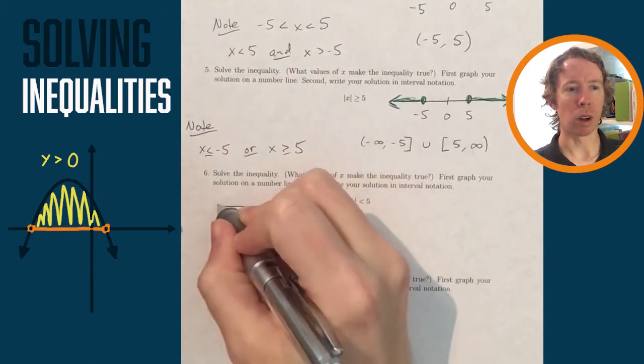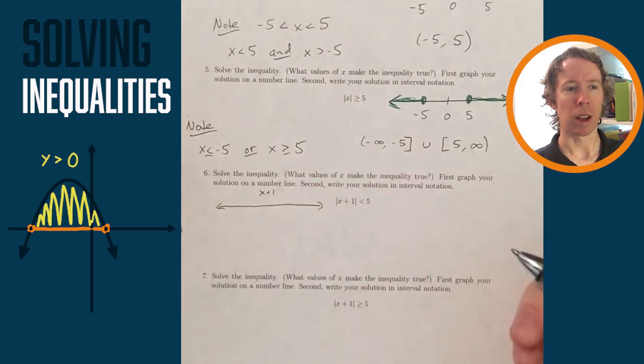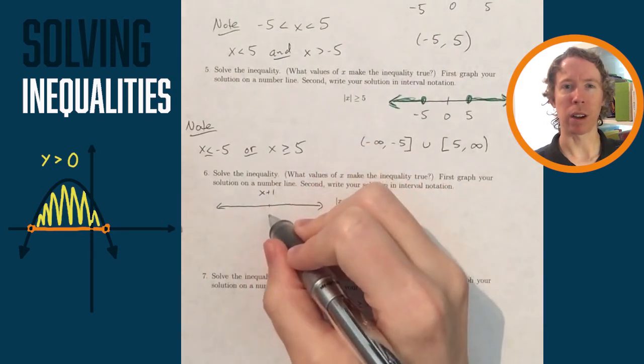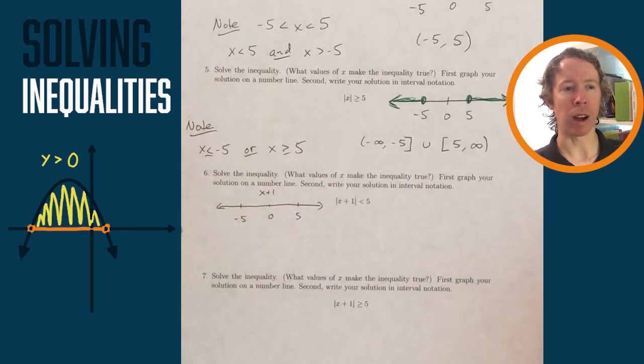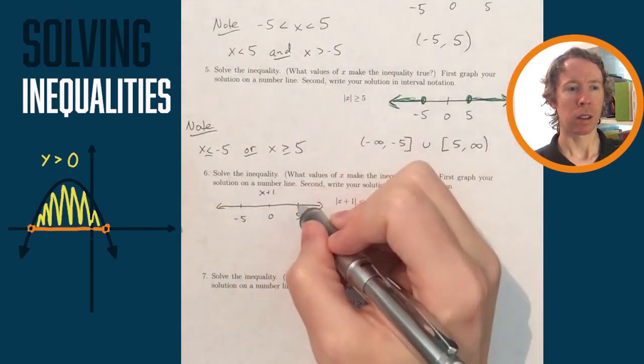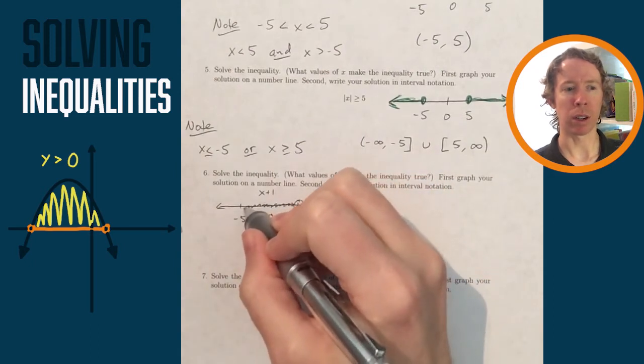If the absolute value of x plus 1 is less than 5, then I'm going to go ahead and sketch the graph of x plus 1 on a number line. I know that it has to be between negative 5 and 5, and I need an open circle at negative 5 and 5 because they're not included.